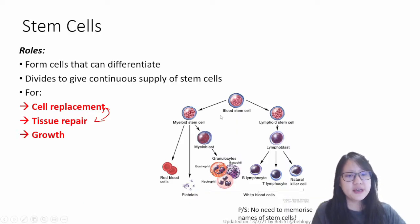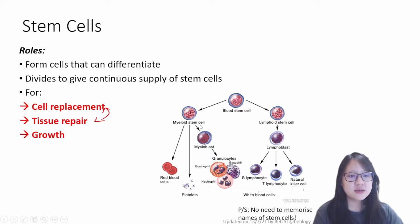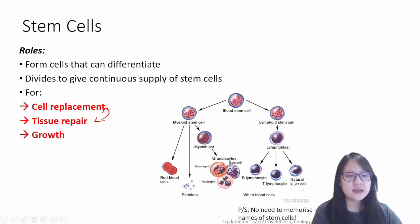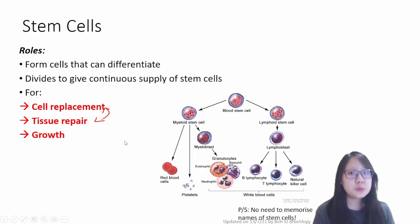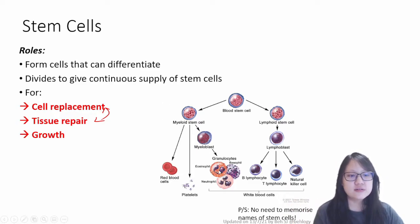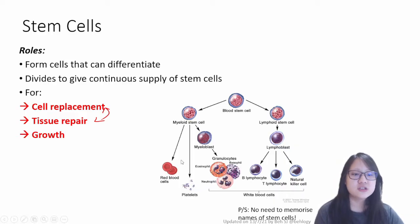For example, we have a blood stem cell here. Types of blood stem cells are myeloid stem cells and they can give rise to red blood cells, platelets, myoblasts, and all these different white blood cells. In lymphoid stem cells here, you can see it can give rise to many different cells as well. Because they can continually divide and continually make more of themselves, they are great to repair and replace cells that are damaged.